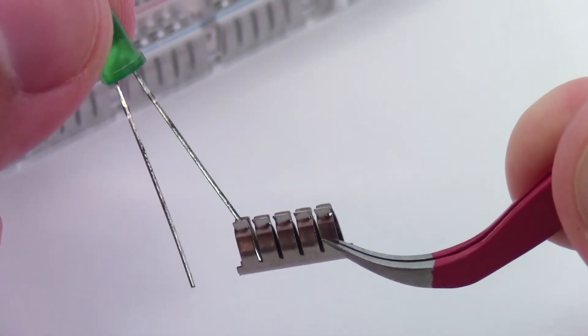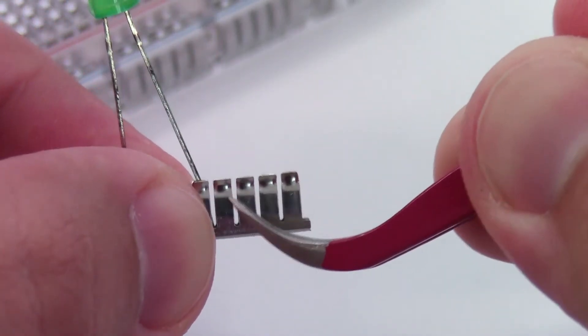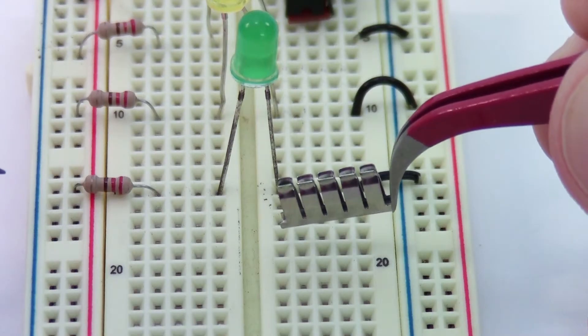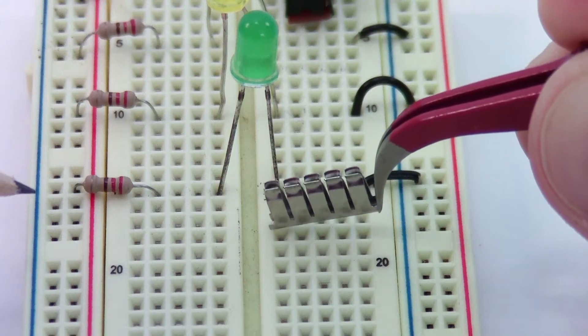So for example, if I push the leg of this LED into the first clip on the left, it is electrically connected to the four other clips. Knowing how the clips are arranged inside the breadboard allows us to use the breadboard to connect different components and build a circuit.